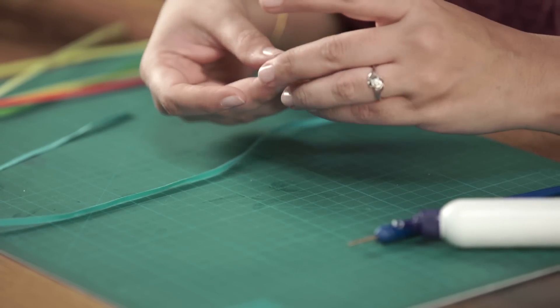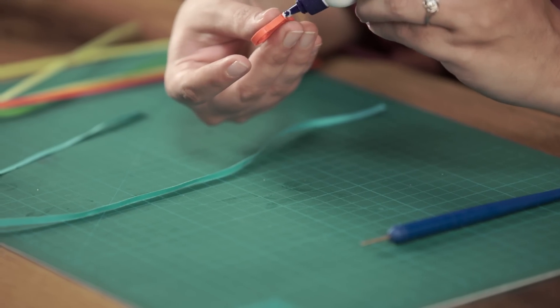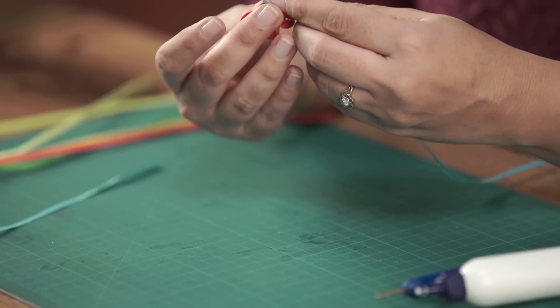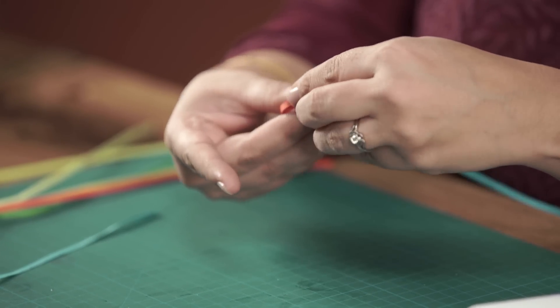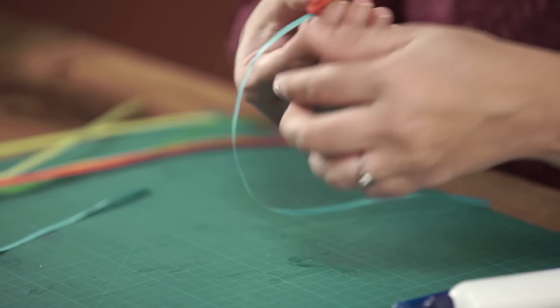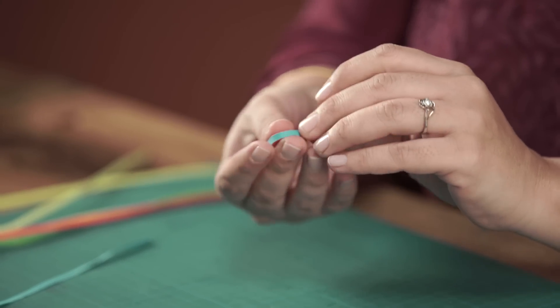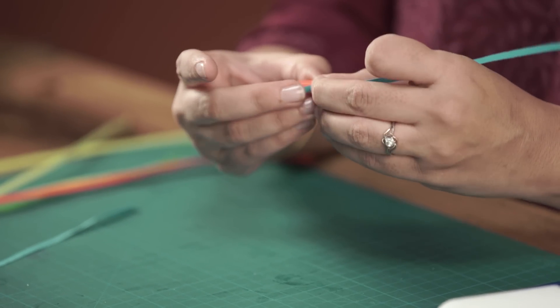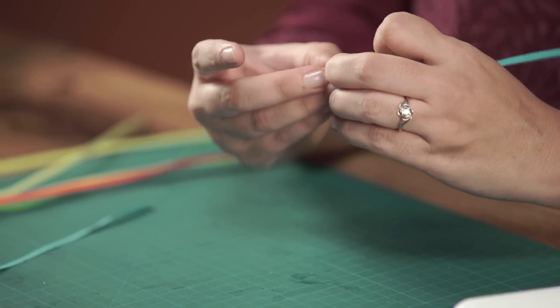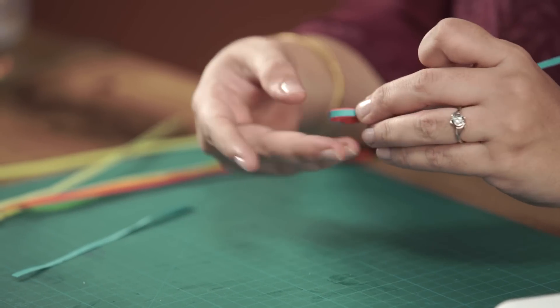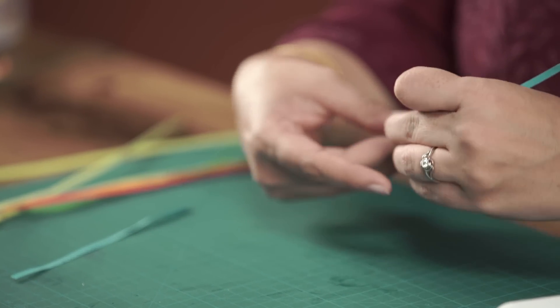You start by rolling this blue strip of paper around the petals. Tighten it up a bit. This is how it's going to look.